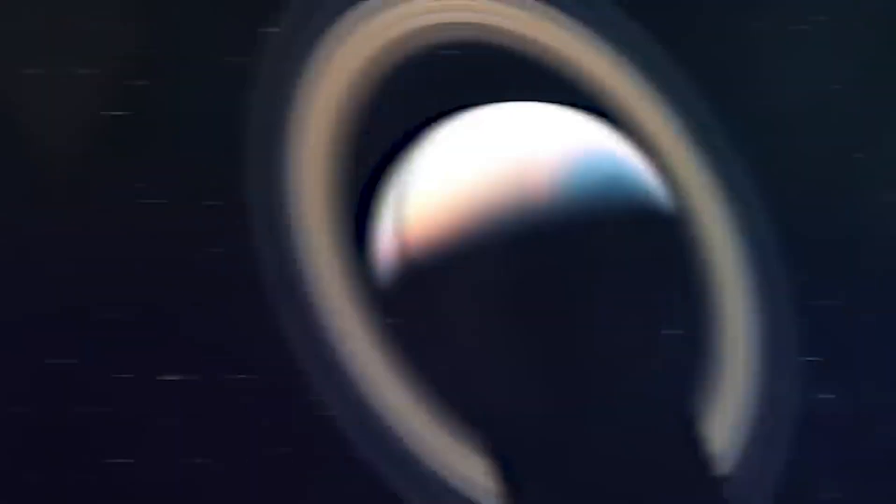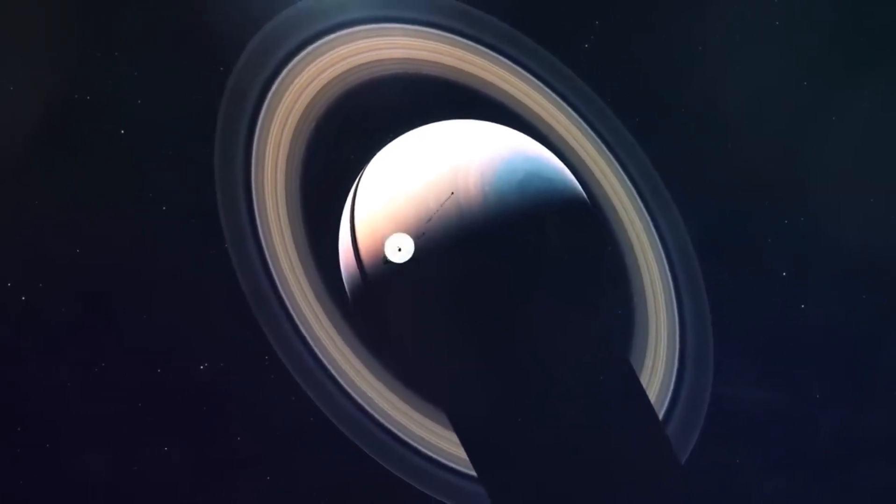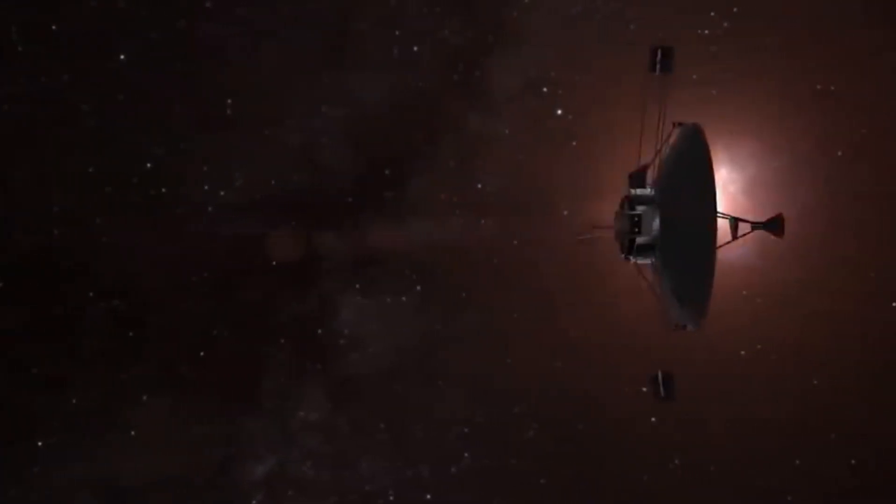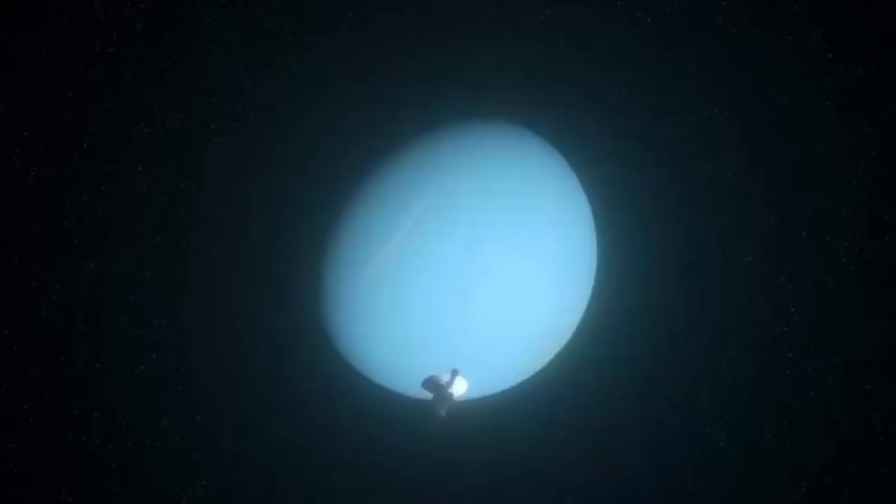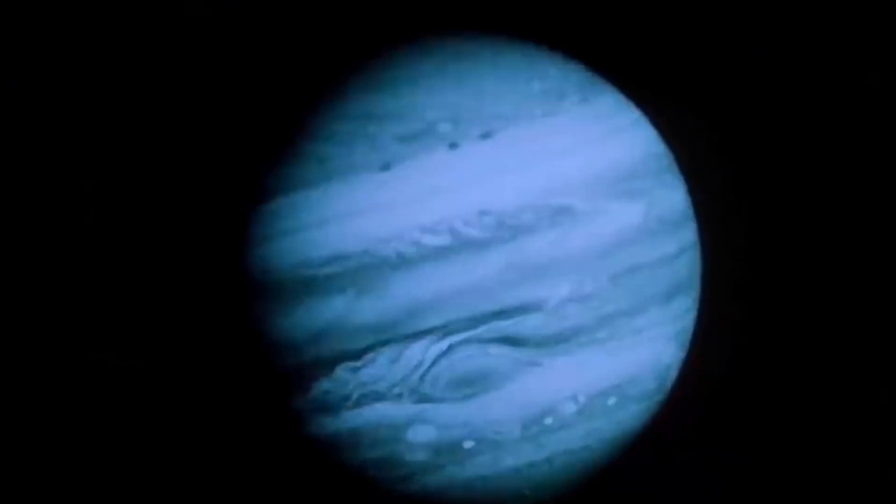Since then, Voyager 2 has only grown more and more distant, now leaving our solar system behind at a velocity of 34,000 miles per hour. In 2018, more than 41 years after its launch, Voyager 2 crossed the threshold between our solar system and interstellar space.